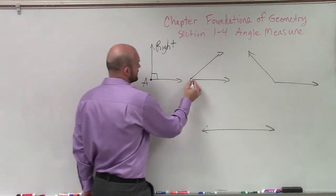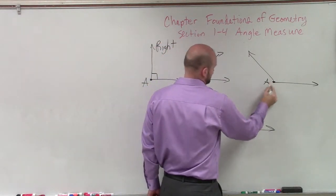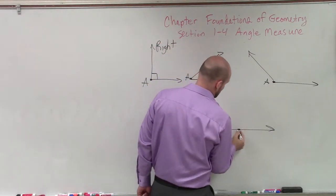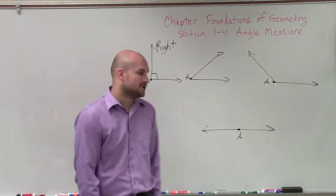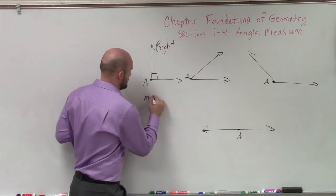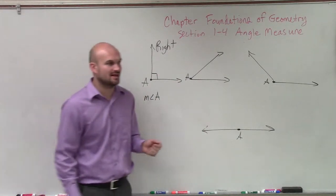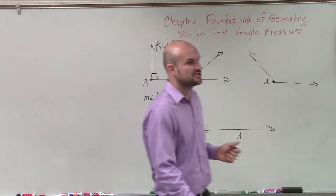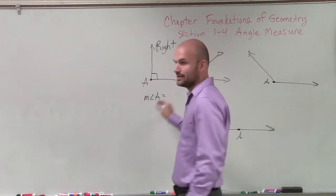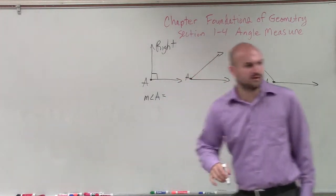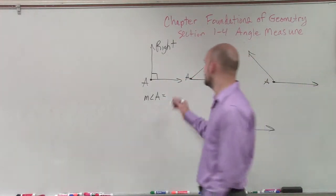And let's call all these angles A, just to keep things simple. So the measure of angle A — that's what I say when I read that out loud — the measure of angle A equals, for a right angle, somebody remember what it was? 90 degrees. Exactly, 90 degrees.